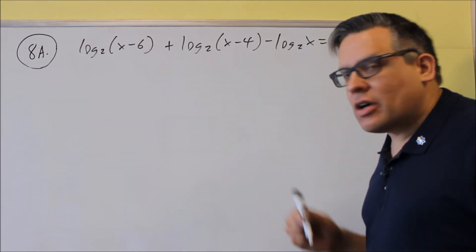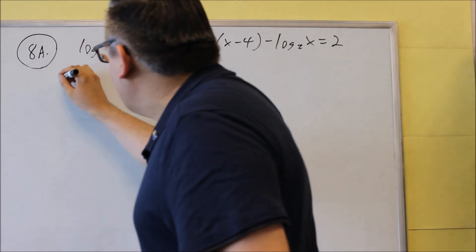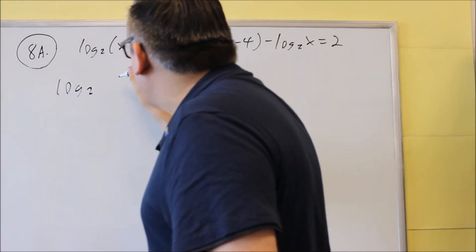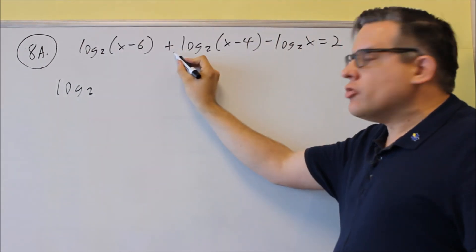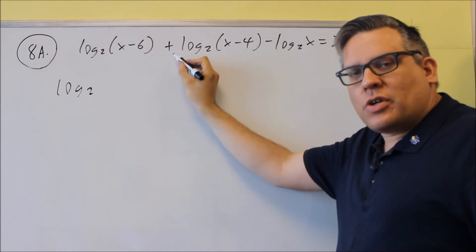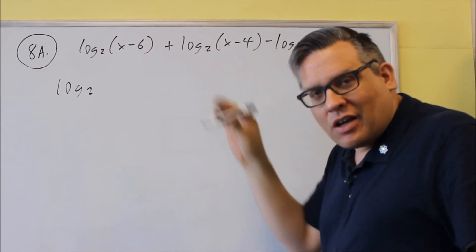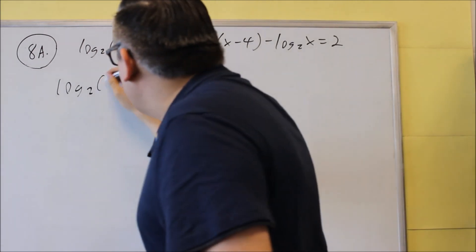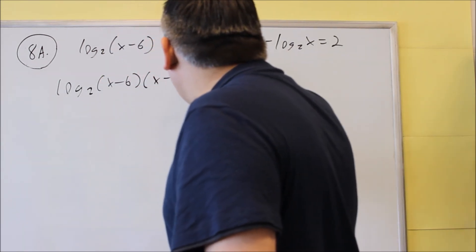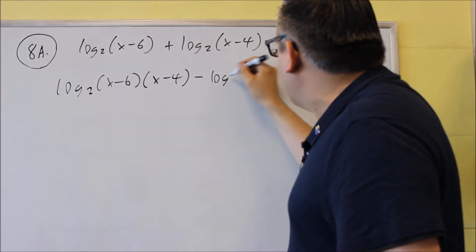We're going to combine these together into a single log. So we're going to do log, first I'm going to do these first two, there's a plus, so plus means that we're going to go back into multiplication when we're going the other direction by condensing this. So we're going to do x minus six times x minus four. We still have the rest of it.